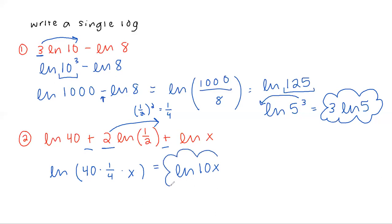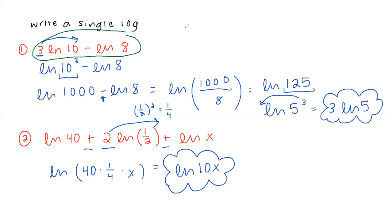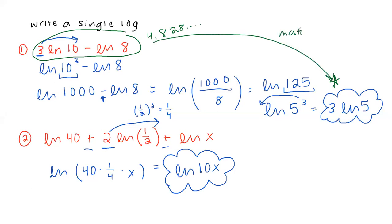On this one, I can't simplify further the way I did in the last problem, because 10 cannot be rewritten with exponents, so ln of 10x is the final answer. If you wanted to check this in your calculator, for the second example you'd need to pick a value for x. For the first example, you can type the original problem using the LN button — not the log button — and you'd get approximately 4.828. Type your answer in as well and make sure the two match.